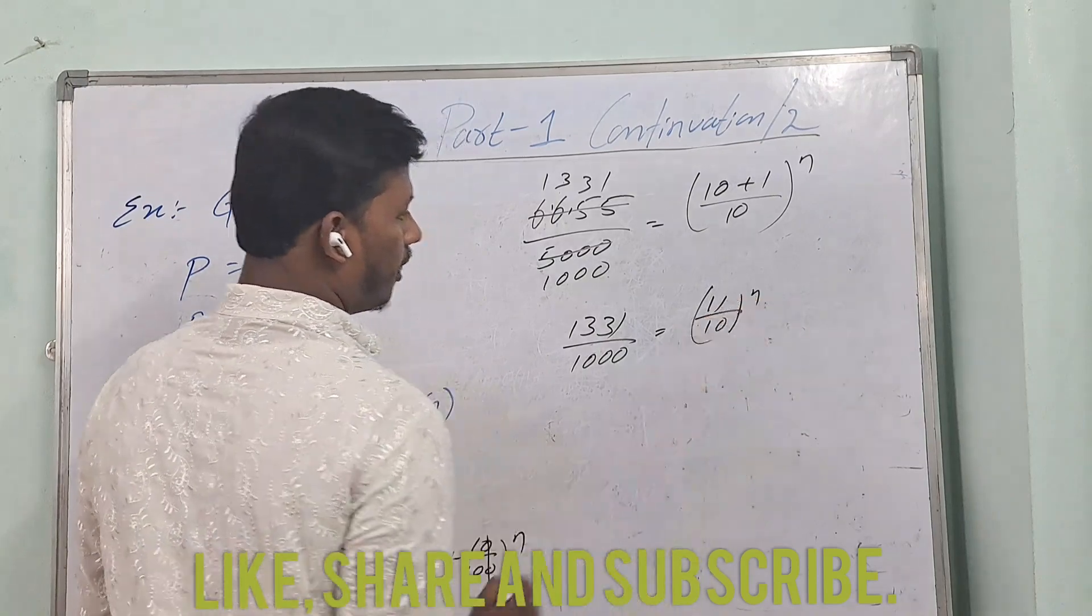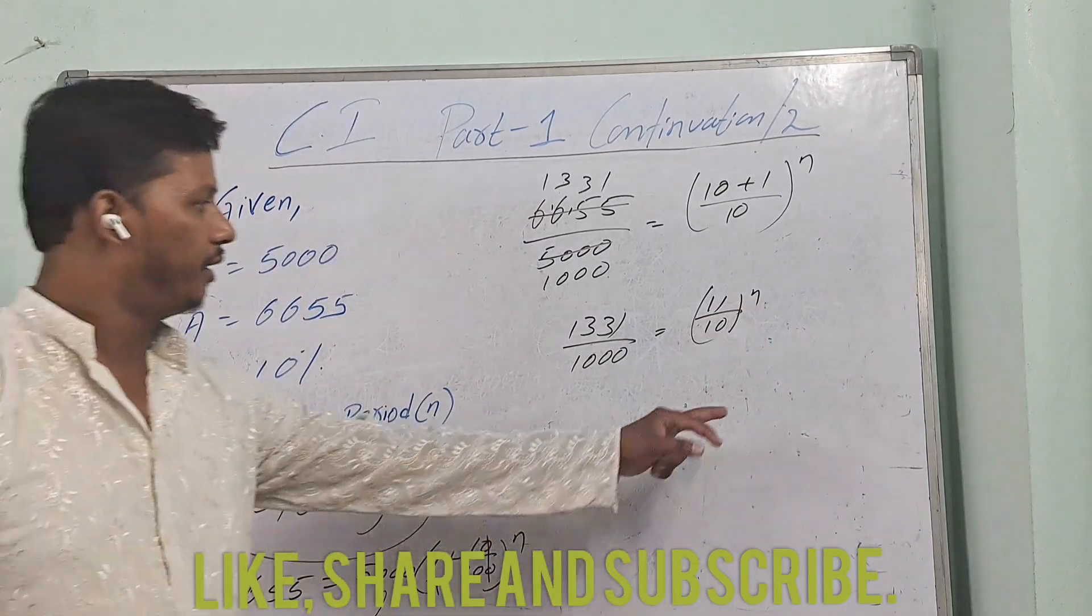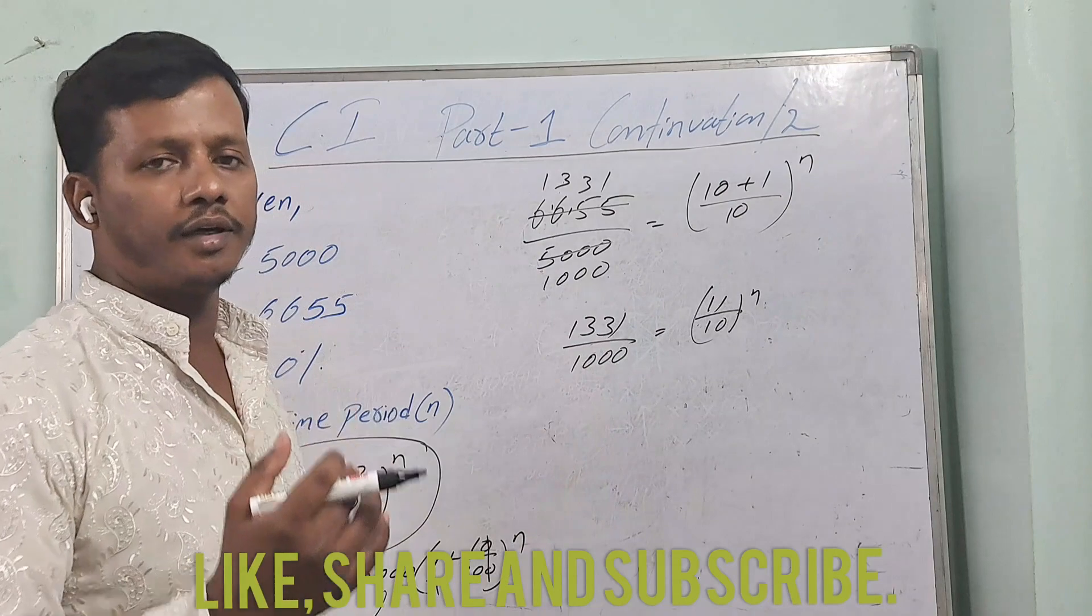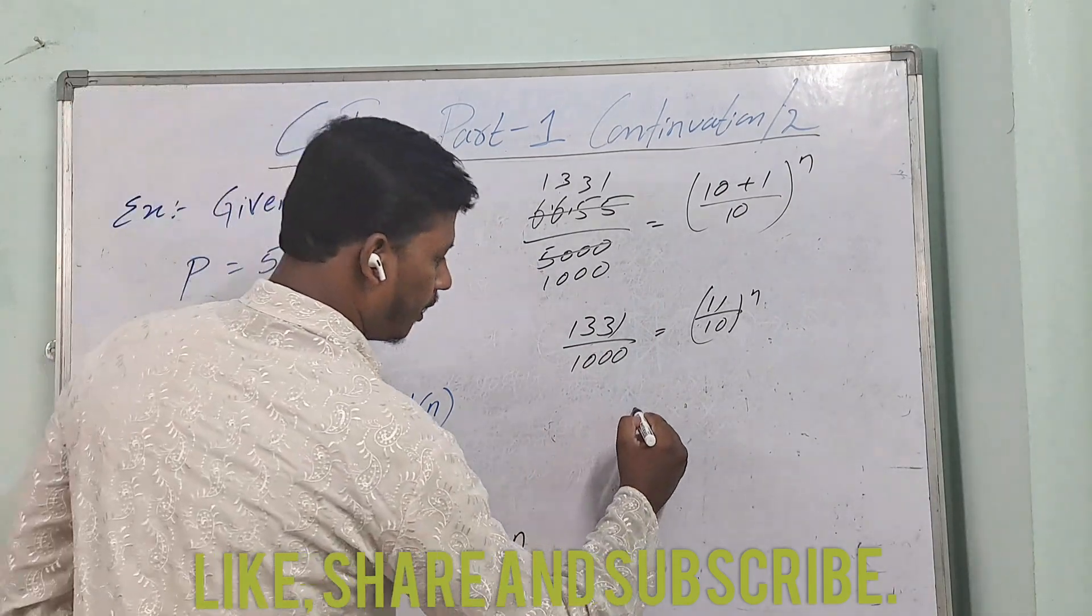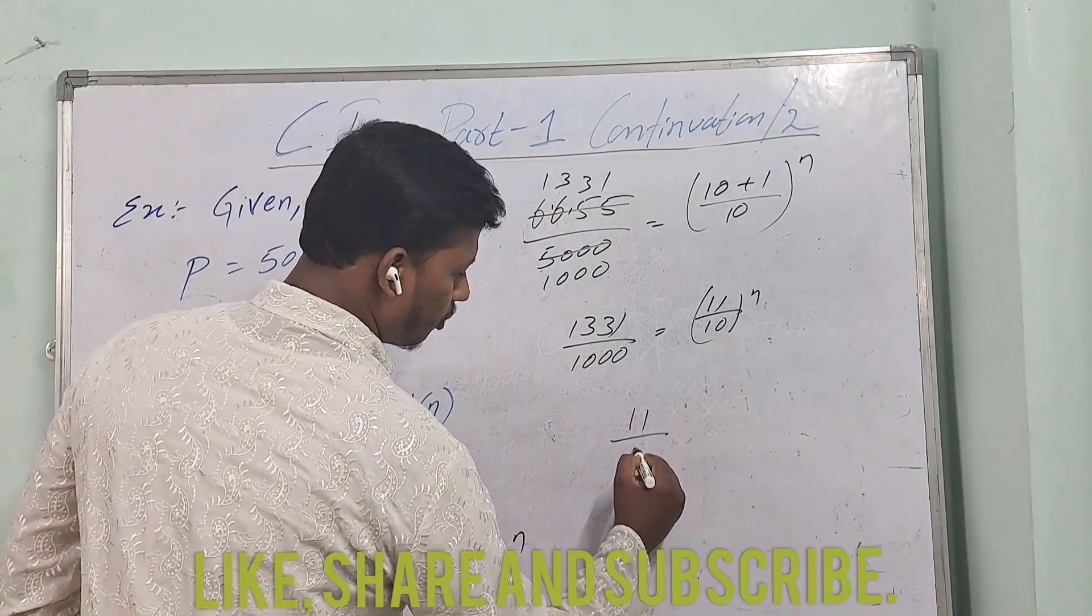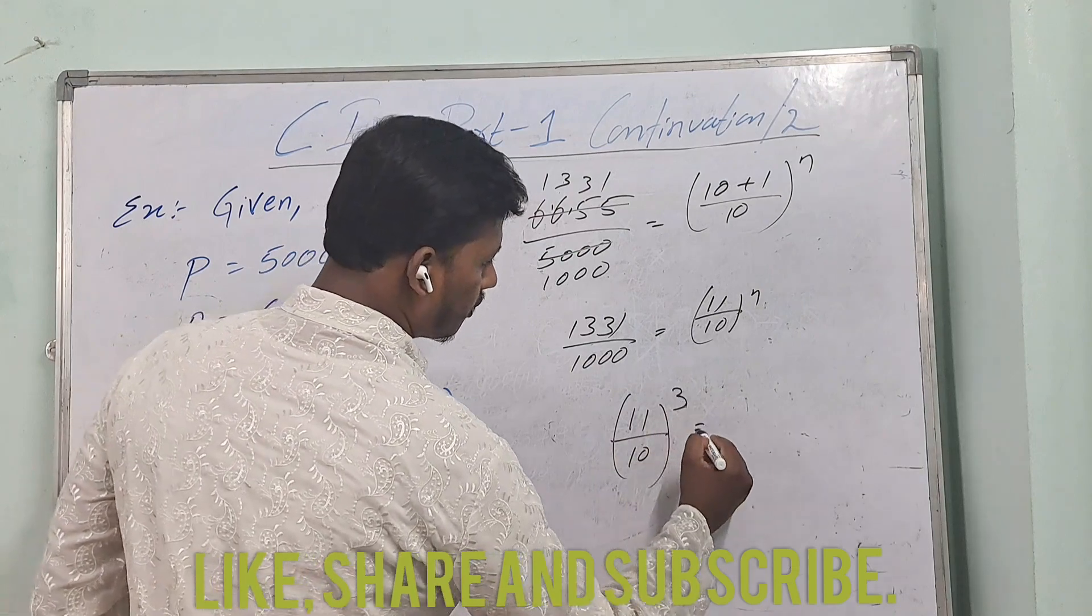Now we have to find the value of n. 1331 is a cube of 11. 1000 is also cube of 10. So 11 by 10 whole to the power of 3 is equal to 11 by 10 whole to the power of n.